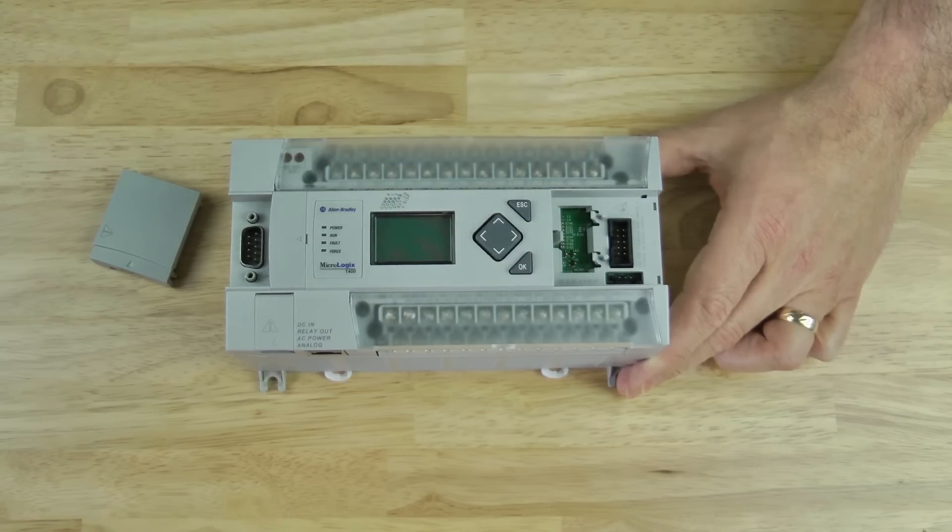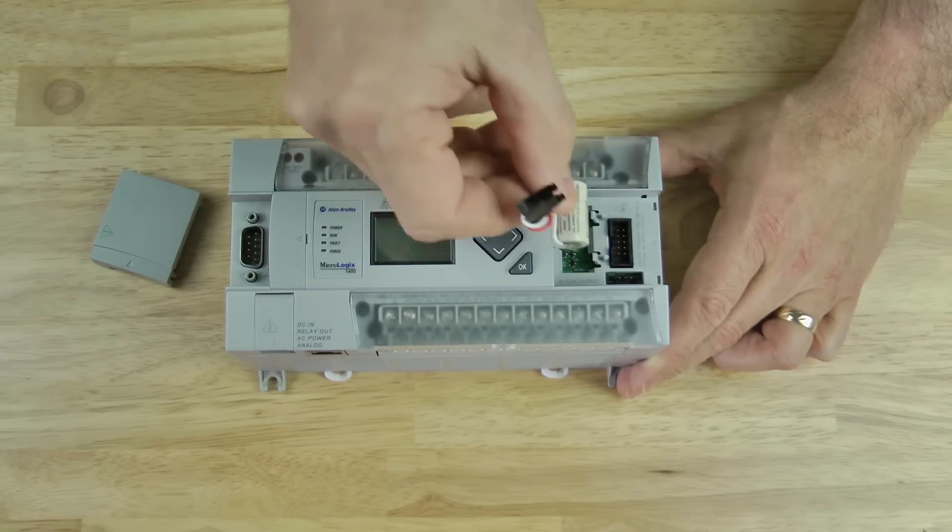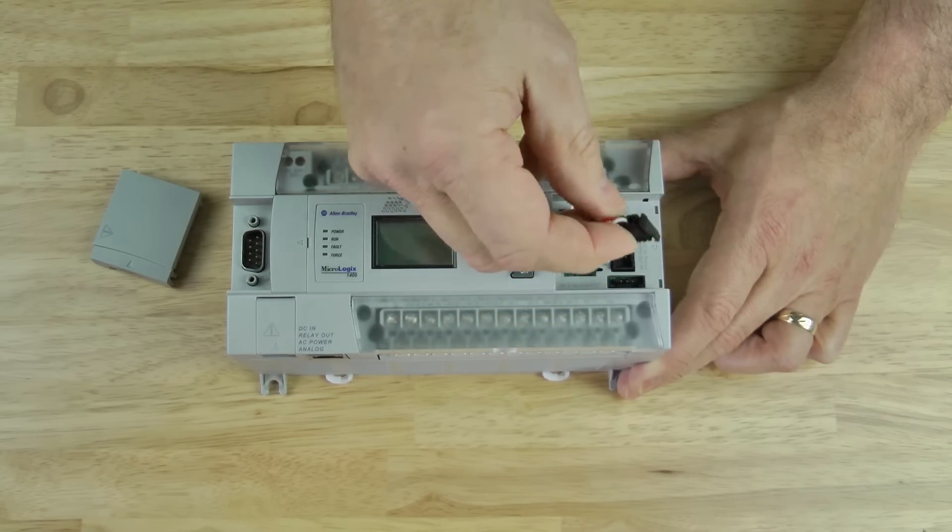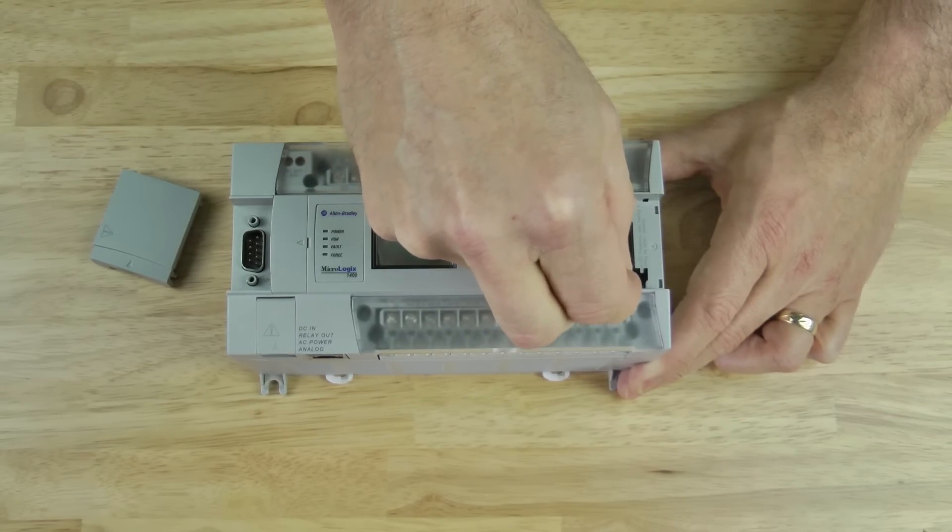With the plug removed, you can now pull the battery out and replace it with a new one, putting the battery in the clip and then plugging it back in. And that can be a little tricky because of the way the plug is keyed.